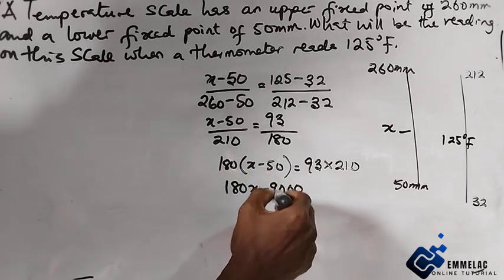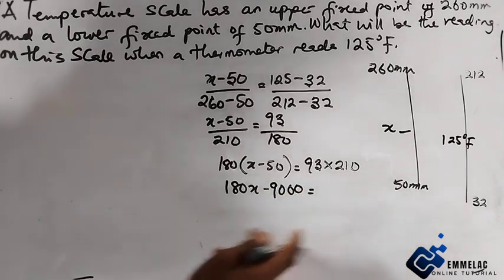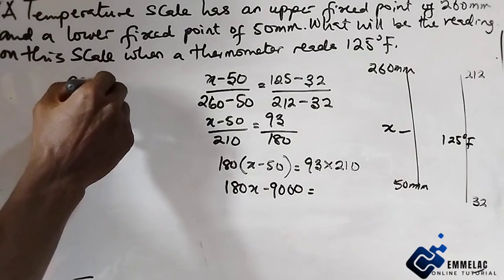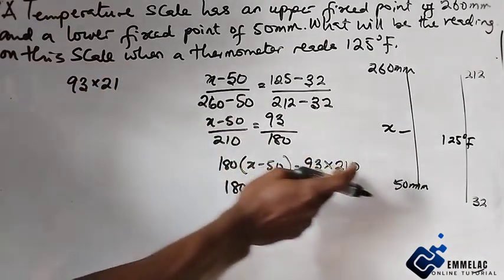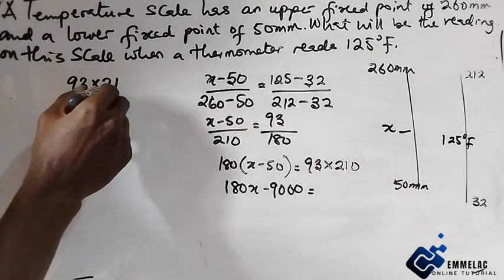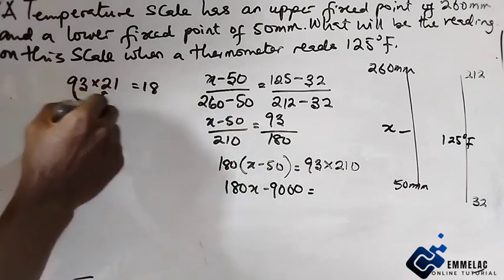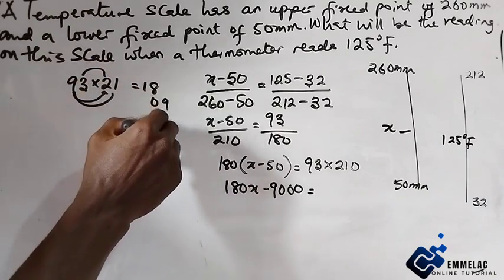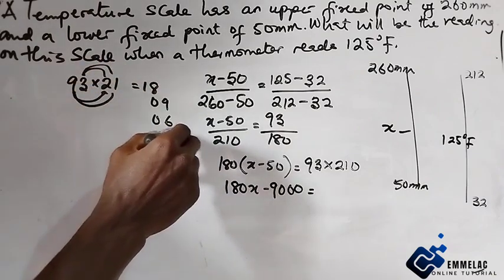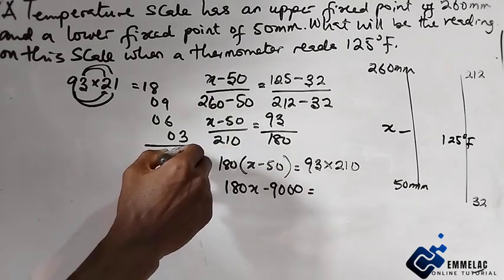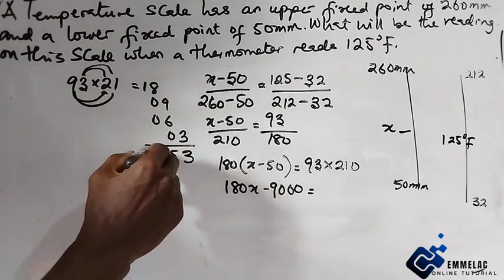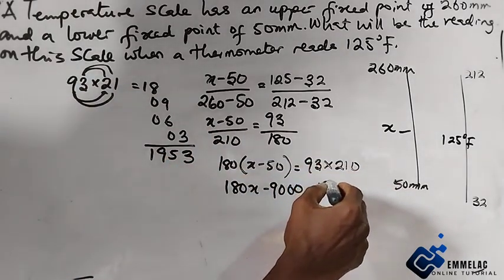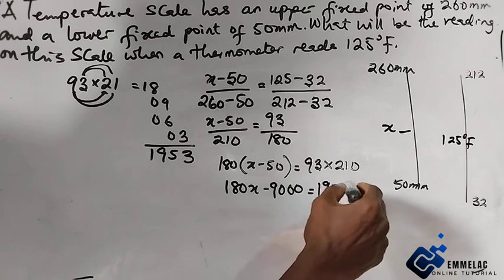Now 93 times 210: 93 times 90 is 8370, 93 times 3 is 279. Adding these gives us 19530.